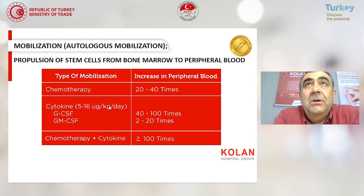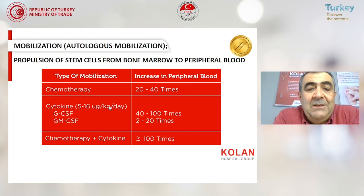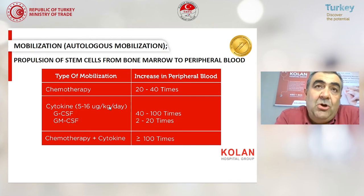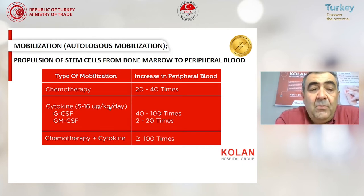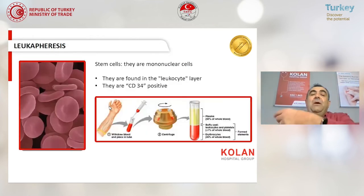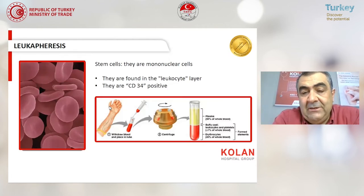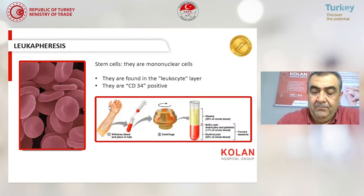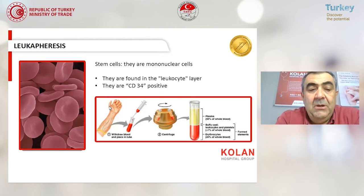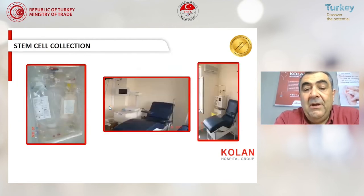For autologous stem cell collection, we need mobilization. For mobilization in autologous transplantation patients, we use chemotherapy and cytokines. After the mobilization period — approximately 10 to 15 days — we collect peripheral stem cells using the leukapheresis and apheresis machine. This is the apheresis machine with its set and apheresis bed — this is the apheresis area.